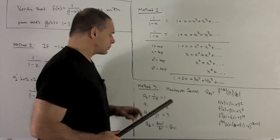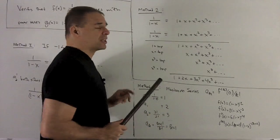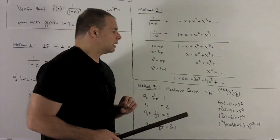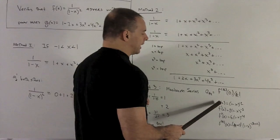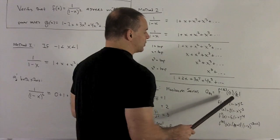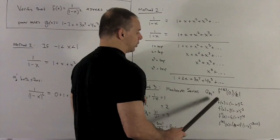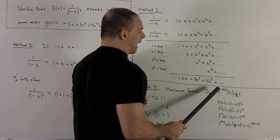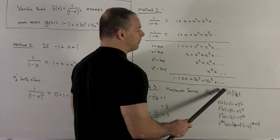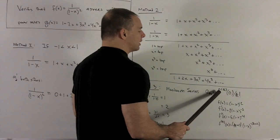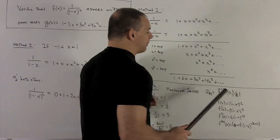Method 3, let's just form the Maclaurin series and see what comes out. So for my f(x), we're looking at (1-x)^(-2). Our rule is going to be the kth Taylor coefficient is given by f raised to the kth power, meaning take k derivatives, evaluate at 0, and then divide by k factorial.